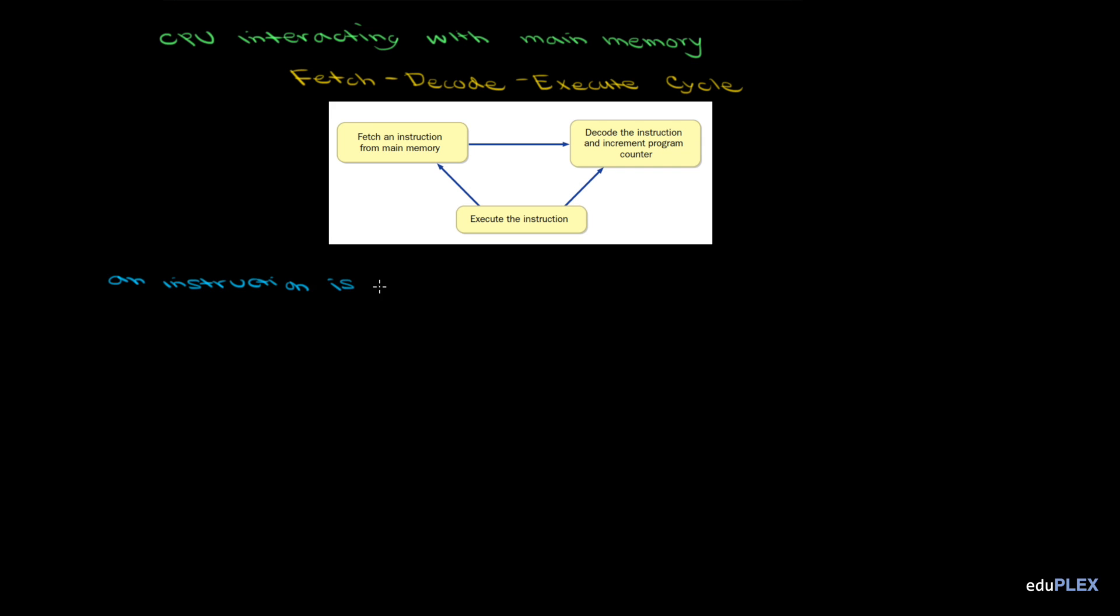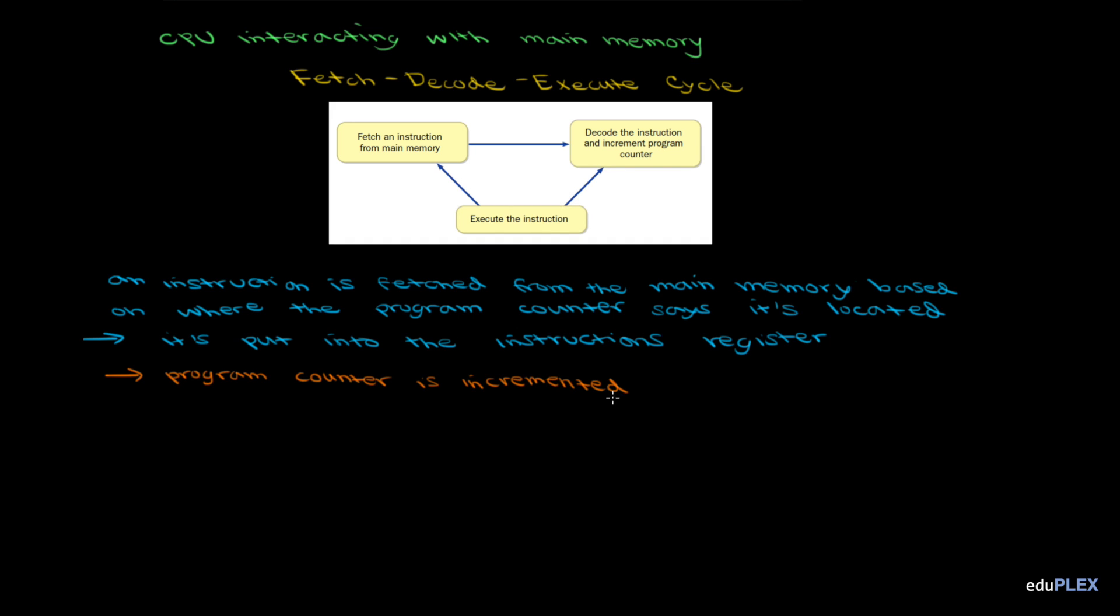Basically, an instruction is fetched from the main memory based on where the program counter says it's located, and then it's put into the instruction register. The program counter is incremented to prepare for the next cycle, and then the instruction's decoded to figure out what operation needs to happen. The control unit then carries out the instruction, whether it's loading a data value onto the register or performing a computation.